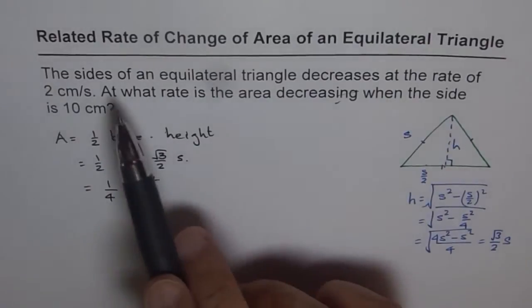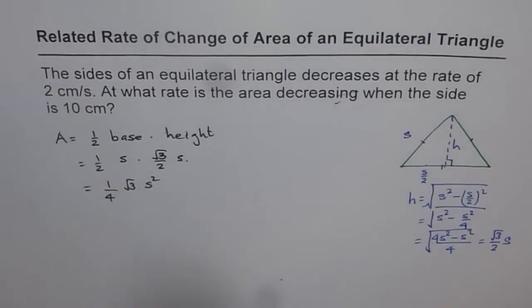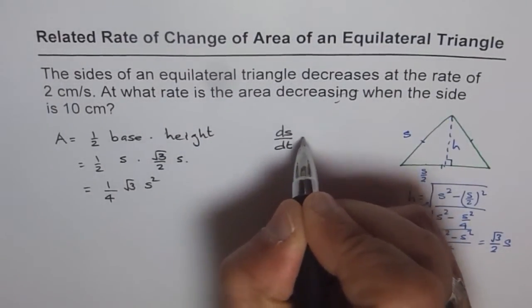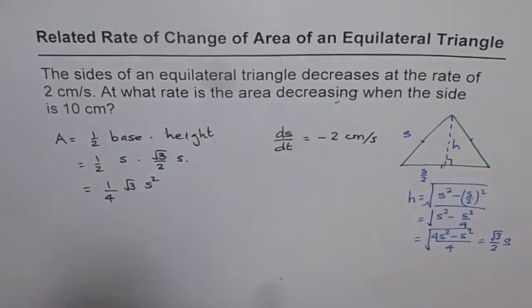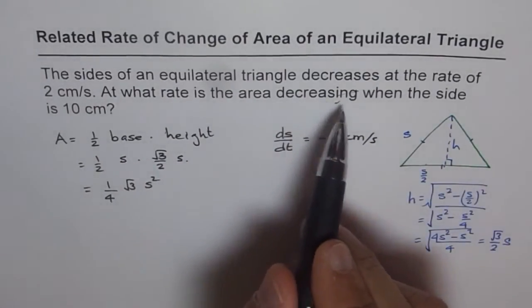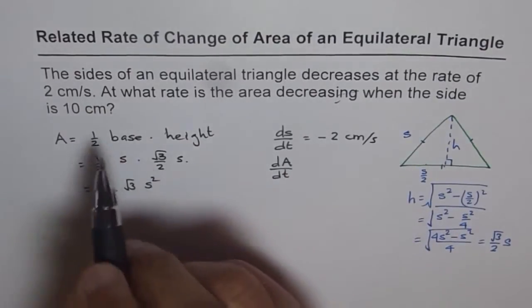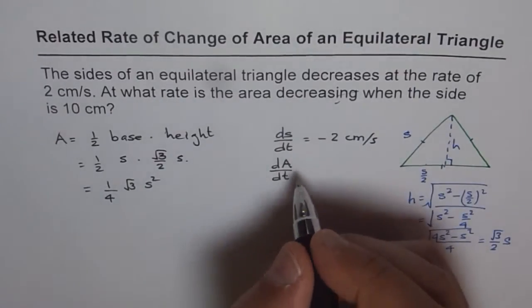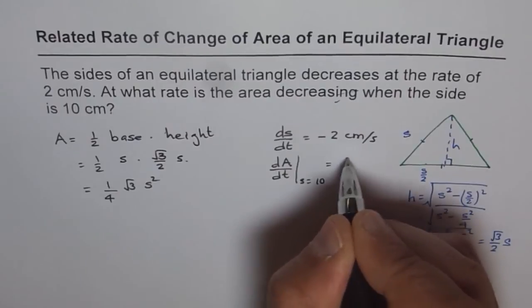Now, it's given to us, the sides of the equilateral triangle are decreasing at the rate of 2 centimeters per second. That means dS/dt equals minus 2 centimeters per second. At what rate is area decreasing? So we need to find dA/dt when the side is 10 centimeters. So this is what we need to find.